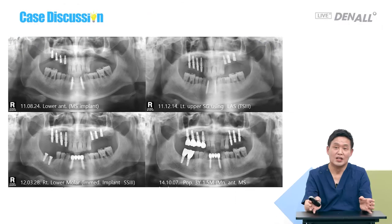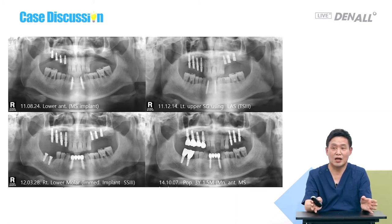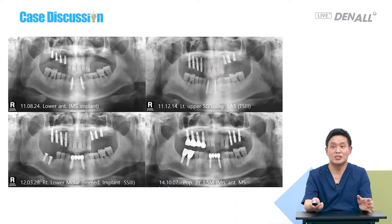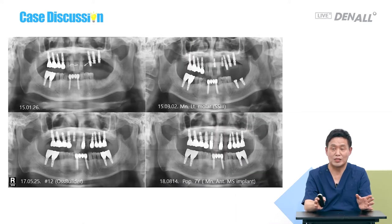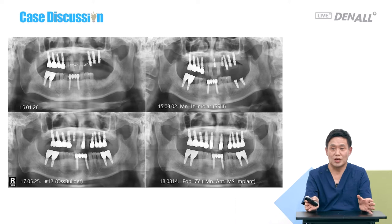I used the last kit to do the sinus graft on the other side. In March 2012, SS implants were placed in the mandible. If you look at the panorama, the MS implants in the lower anterior — post three years and two months — the patient controlled his diabetes and used the implants pretty well. He couldn't do all the treatment for the whole mouth at the same time; for economic reasons he came from time to time, one step at a time. Post-op seven years: the patient didn't want to lose his teeth, so from time to time I extracted one or two at a time.